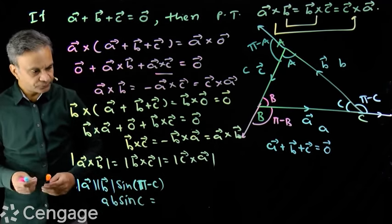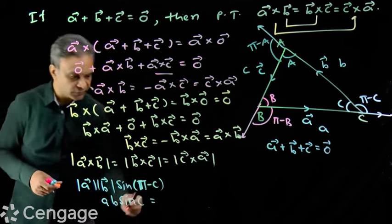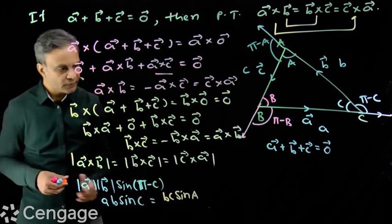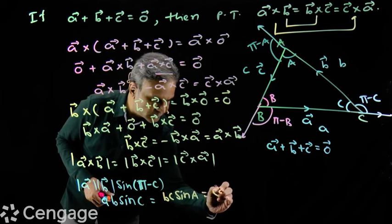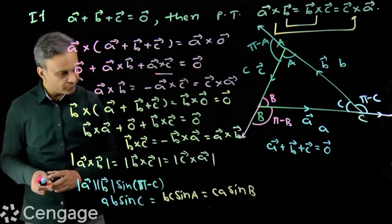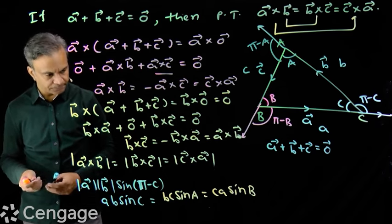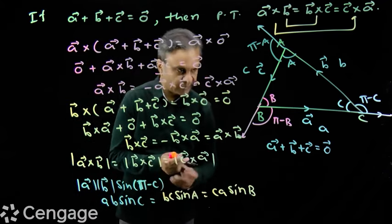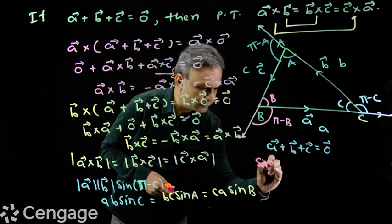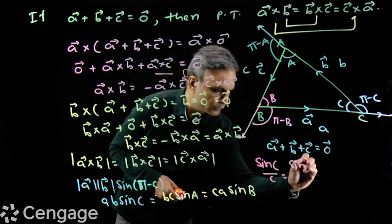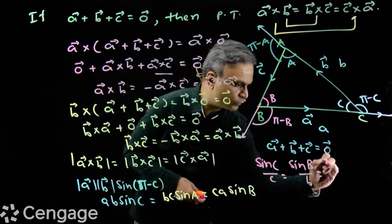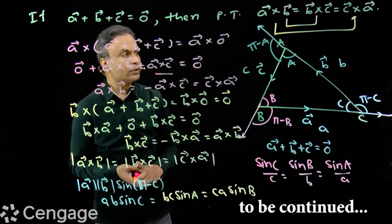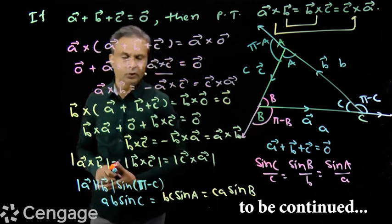Similarly, modulus of b cross c equals bc·sine A, and modulus of c cross a equals ca·sine B. Since all three are equal: ab·sine C = bc·sine A = ca·sine B. Dividing each side by abc, we get sine C / c = sine A / a = sine B / b. This is the sine rule of a triangle, which we have verified using vector cross product.